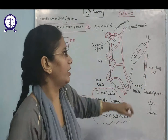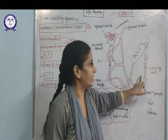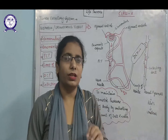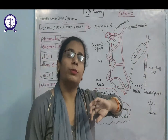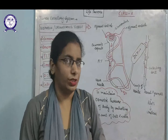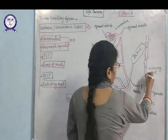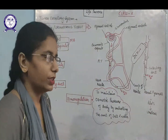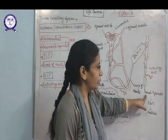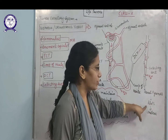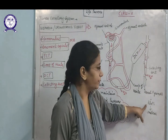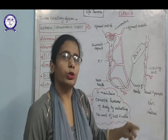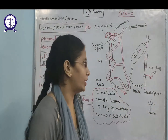A number of nephrons are connected to a single collecting duct, meaning one collecting duct carries the waste from many nephrons attached to it. Absorption of water also takes place here. After that, waste passes into the renal pyramids, then to the renal pelvis, then to the ureter, then the urinary bladder, and finally to the urethra.